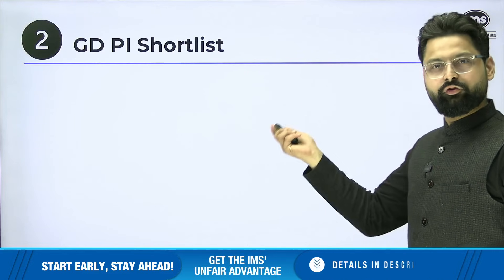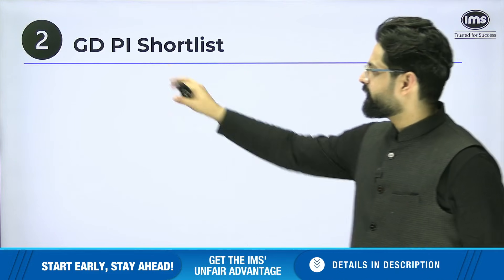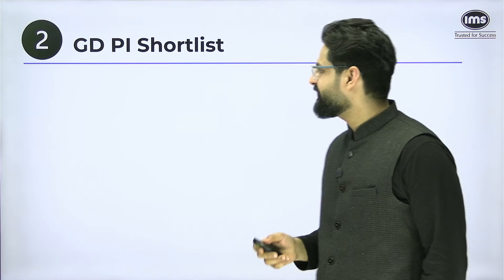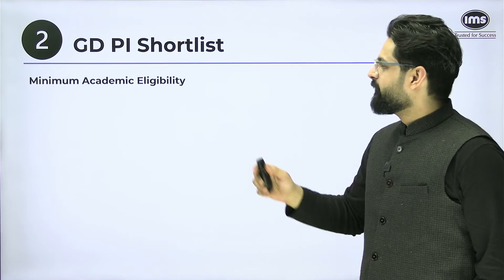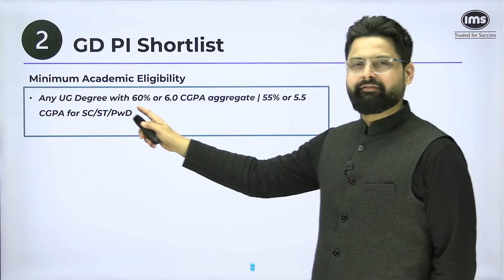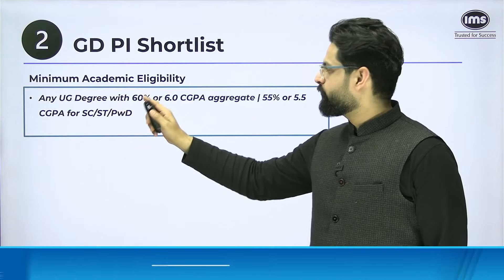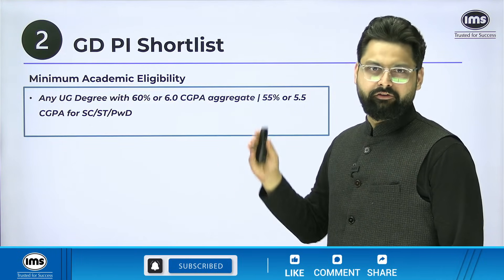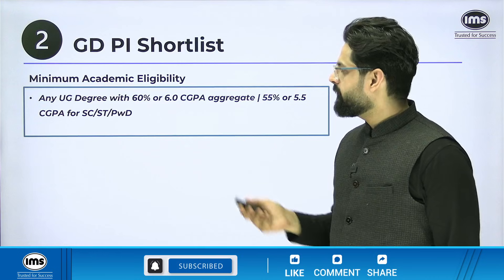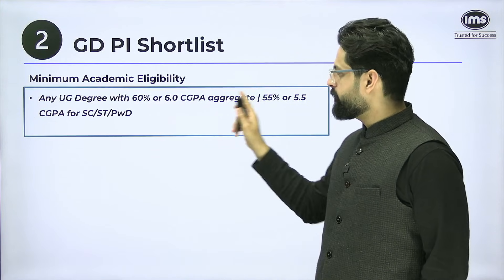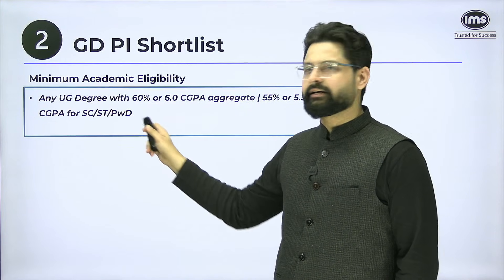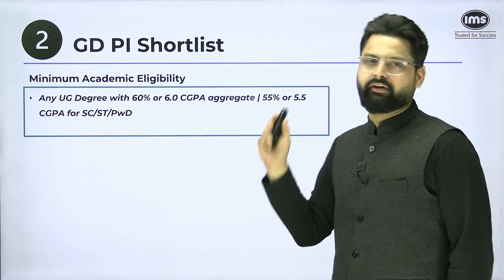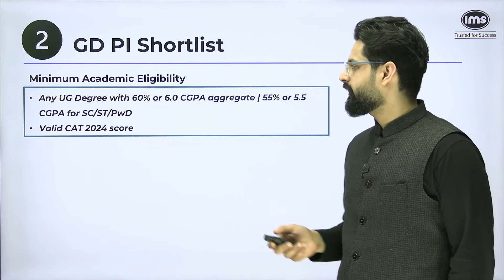For the PI shortlist, it's only a PI — not a GDPI. The minimum academic eligibility is any undergraduate degree with 60% for General, EWS, or OBC candidates, and 55% for SC, ST, and PWD candidates. If you have a CGPA, the requirement is 6.0 and 5.5 respectively for the two categories.